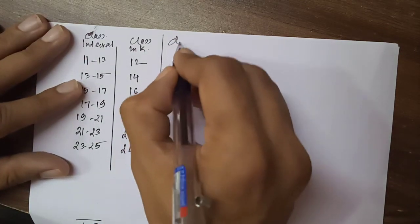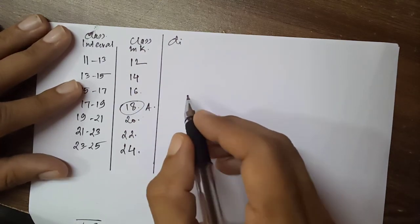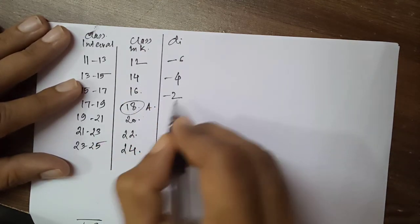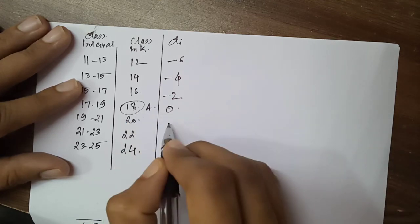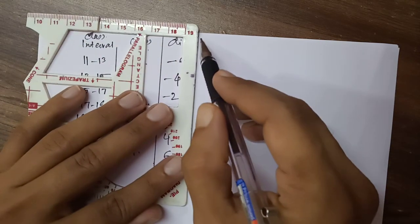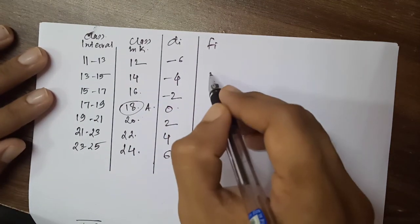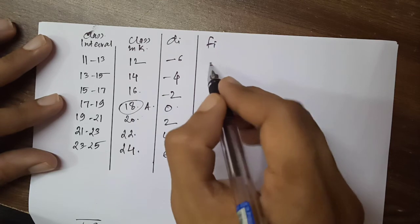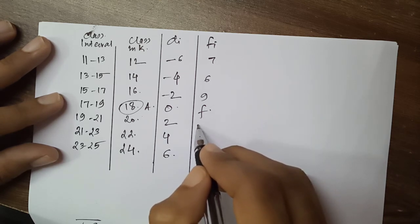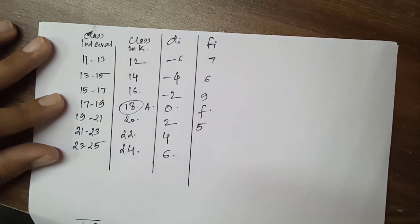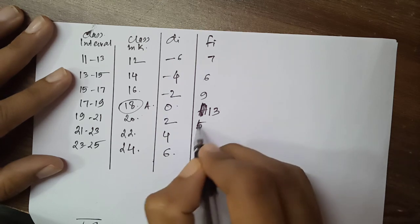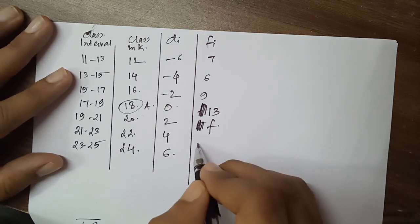We calculate the deviations di: 12 − 18 = −6, 14 − 18 = −4, 16 − 18 = −2, 18 − 18 = 0, 20 − 18 = 2, 22 − 18 = 4, 24 − 18 = 6. The given frequencies are: 7, 6, 9, 13, f (missing), 5, 4. We need to find f.